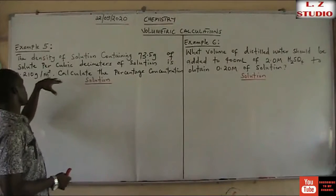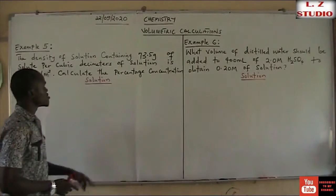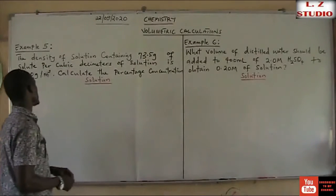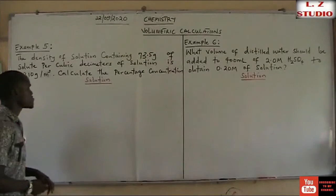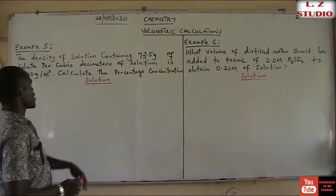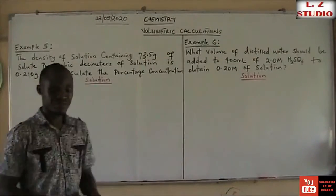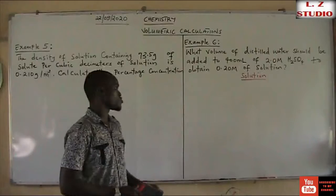This is Example 5, which says that the density of a solution containing 73.5 grams of sodium per cubic decimetre of solution is 0.210 grams per metre cube. Calculate the percentage concentration. It is very simple and straightforward.